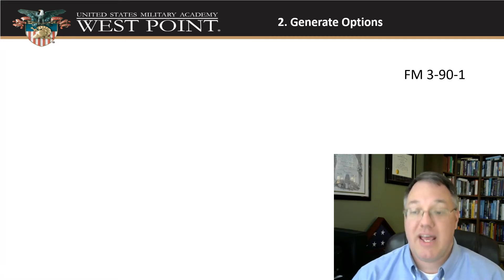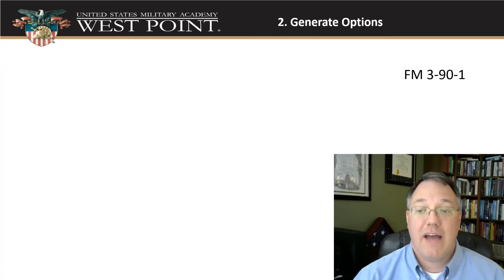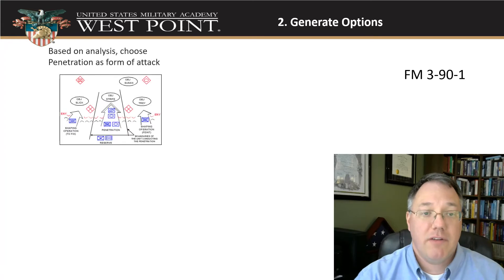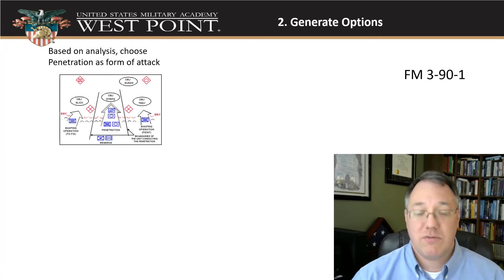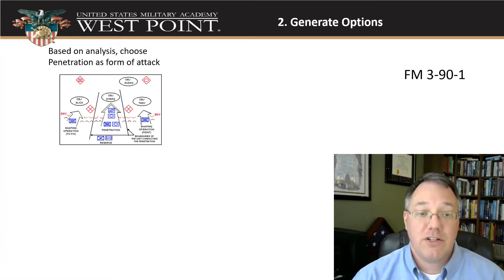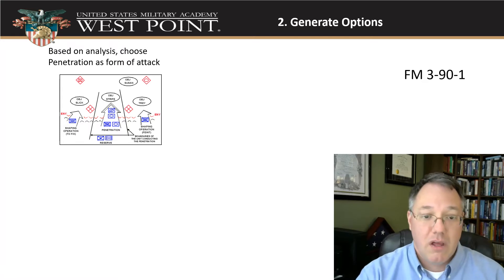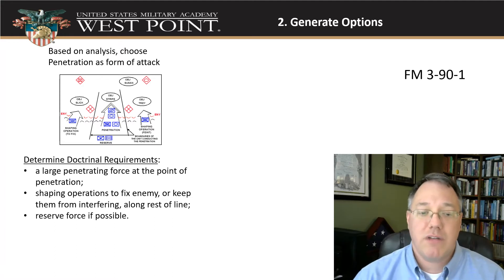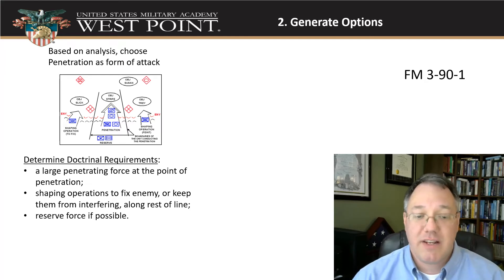My next step is to generate options. I turn to doctrine to understand how to do things — in this case for an attack, we look into FM 3-90-1. We're going to choose one of our forms of maneuver. Given that I've got large firepower and need to penetrate through that breach, I choose to do a penetration as my form of maneuver. From that, I look at the doctrinal requirements: I need a large penetrating force at the point of penetration, shaping operations to fix the enemy, and if possible a reserve force.